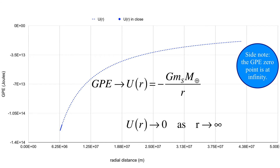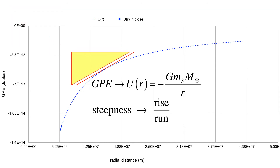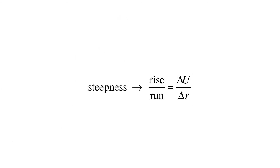Bear that in mind for the homework calculation — no calculus needed, you just need to know where the zero point is. Now let's look at the steepness of the curve. In geometry, steepness is rise over run; in physics, it has physical meaning. It's delta-U / delta-R: joules (kg·m²/s²) in the numerator and meters in the denominator. Canceling one factor of meters leaves kg·m/s². Ask yourself — what is that unit?